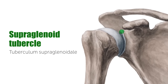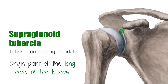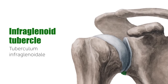Finishing off our tour of the scapula, we note the supraglenoid tubercle. This is a small projection found at the superior margin of the glenoid cavity. Remember this — the supraglenoid tubercle is the origin point of the long head of the biceps. On the inferior margin of the glenoid cavity, you will find the infraglenoid tubercle. This is also an important landmark to remember, since the long head of the triceps arises from this structure.